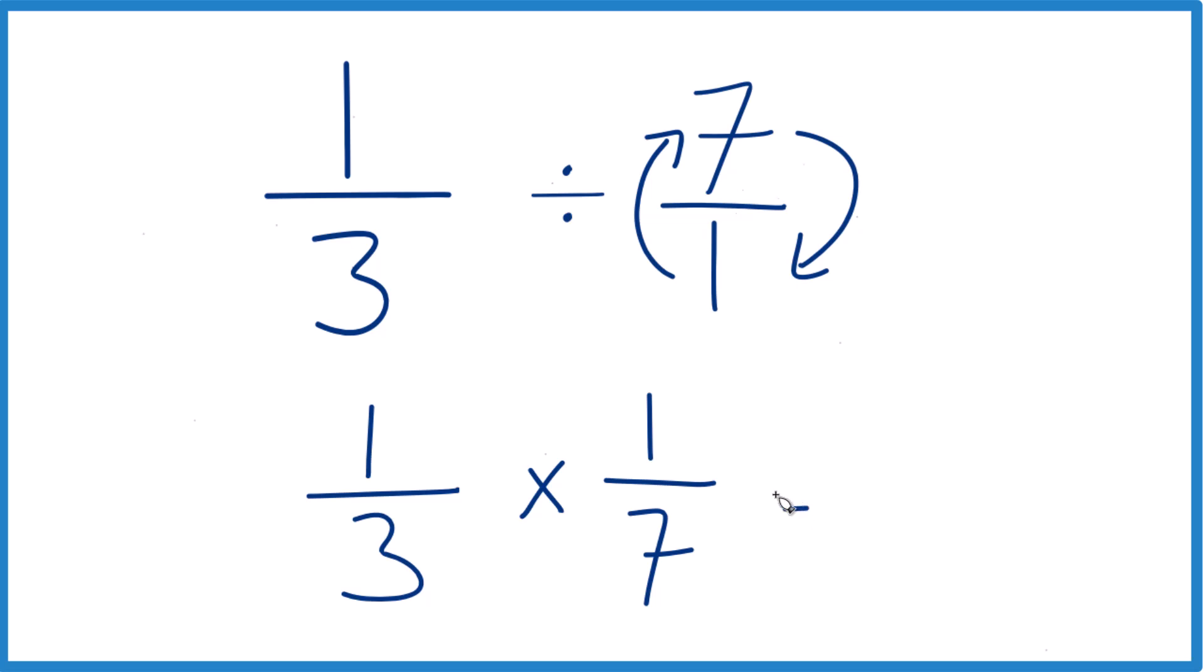Now with fractions, all we need to do is multiply the numerators, 1 times 1, that's 1, and then the denominators, 3 times 7, that's 21.